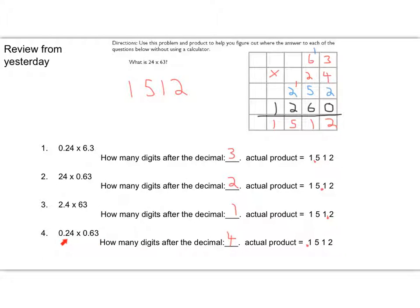This answer makes sense for that. And then two decimal points do really small numbers, which means my product is going to be small, so the decimal point there also makes sense.